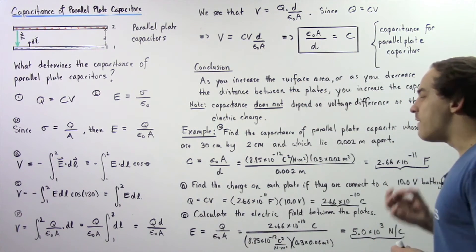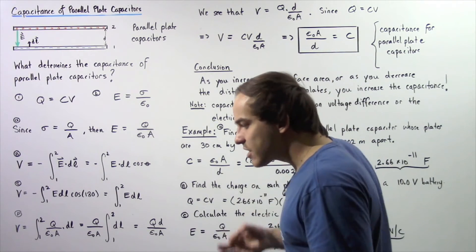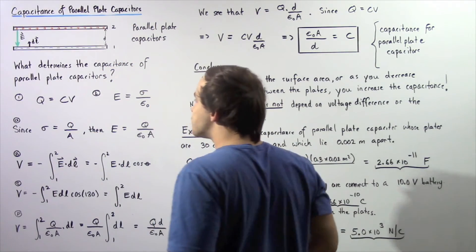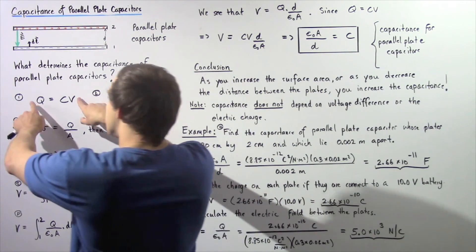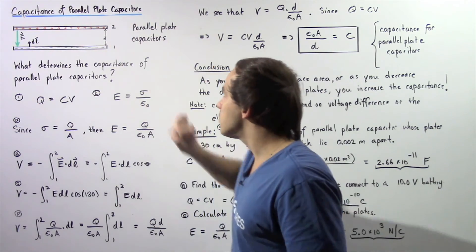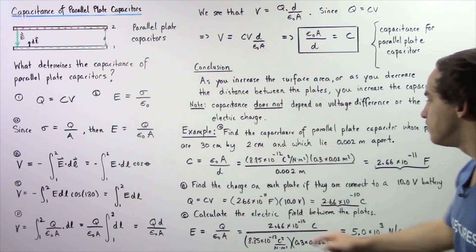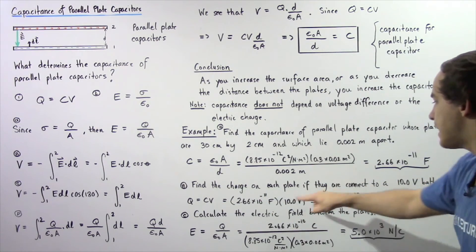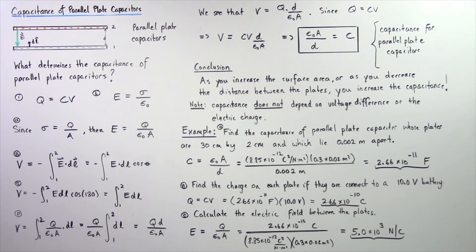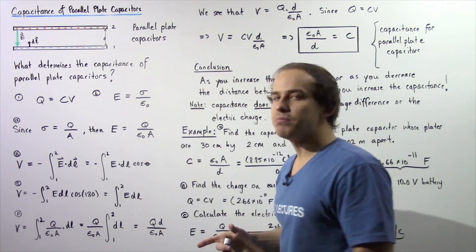In part B, find the charge on each plate if they are connected to a battery with a voltage difference of 12 volts. Once connected, the voltage difference between the plates equals the battery voltage, so V = 12 volts. Using Q = CV, with C = 2.66 × 10⁻¹¹ F and V = 12 V, we get Q = 2.66 × 10⁻¹⁰ Coulombs as the charge stored on either plate.